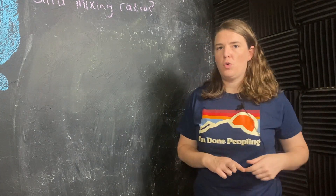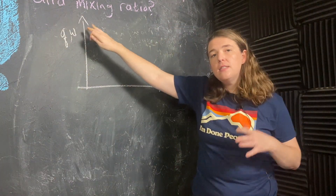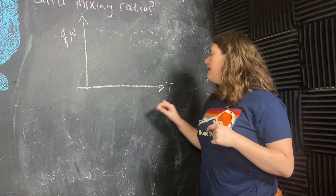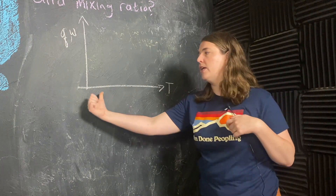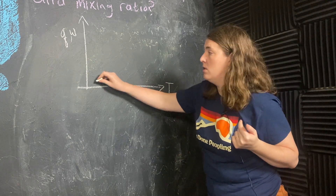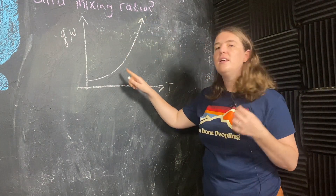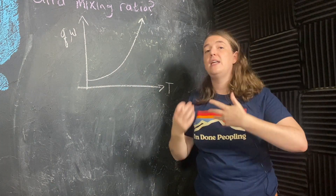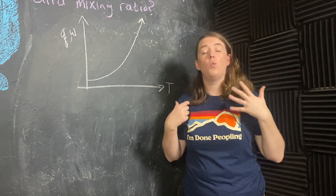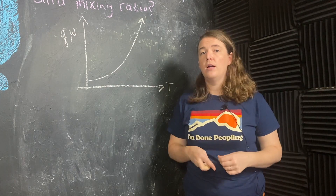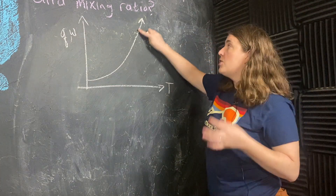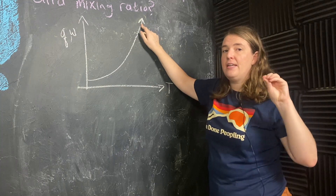Let me sketch you a quick graph. My y-axis here — you can think of it as either specific humidity or mixing ratio; they're going to behave in the same way for these purposes. The x-axis here is temperature, so we're getting warmer as we go to the right. My saturation curve is going to look something like this. Saturation is where relative humidity is 100%, the point at which my air parcel cannot possibly hold any more water vapor.